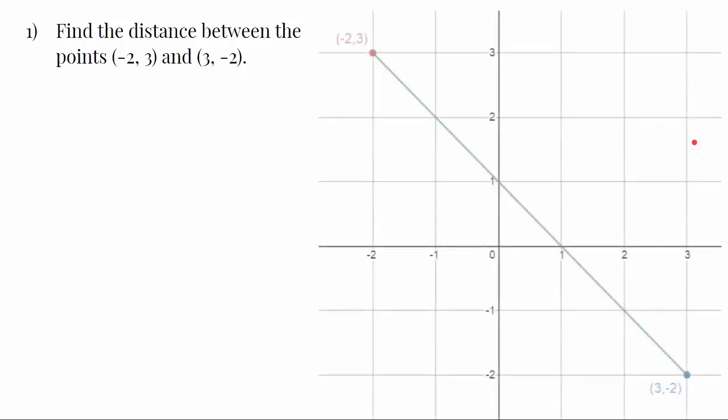The first problem we're going to talk about is finding the distance between the points (-2, 3) and (3, -2). So like we learned in the lesson, the first thing you want to do is plot the two points and connect them with a straight line.